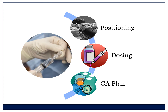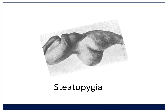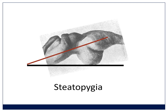Some obese patients will have a condition called steatopygia — you can see the phenotype on screen. Imagine the bed is that black line; the patient lying on it means the spinal column is actually in a head-down position. If you put a spinal anesthetic into these patients in this position, that's the flow your local anesthetic will follow, increasing the risk of a high spinal. There's not normally an increased risk for obese patients at the doses we're talking about, but there will be if you put the patient in this position.